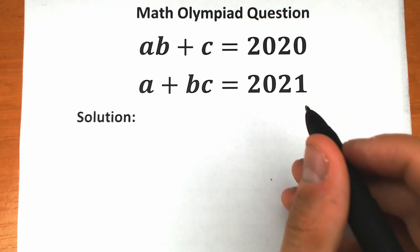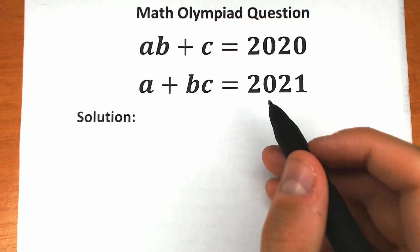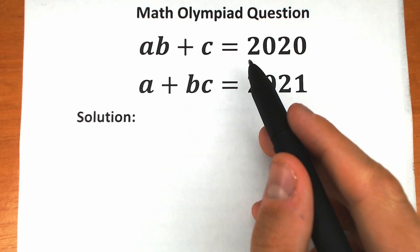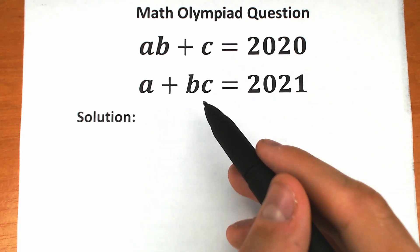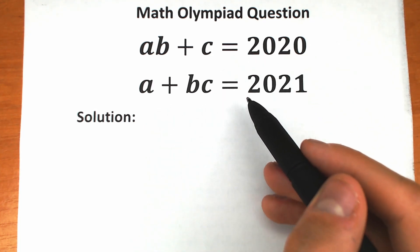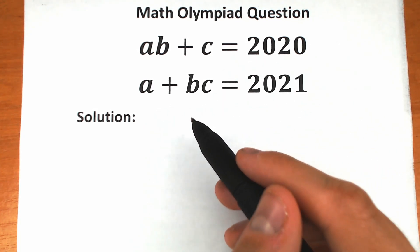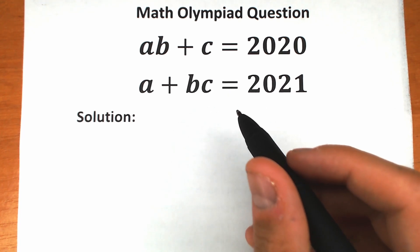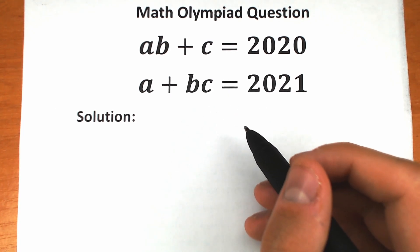Happy to see you here on my channel, Higher Mathematics. We have a really interesting challenge today: ab plus c equals 2020, and a plus bc equals 2021. We should find a, b, and c. In this video I'm going to fully explain how to solve this correctly, step by step.